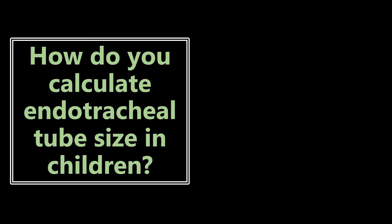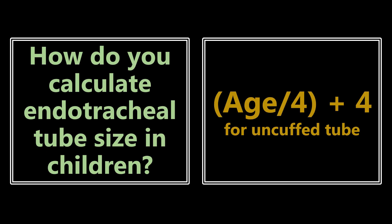How do you calculate endotracheal tube size in children? The formula is age divided by four, plus four. For example, a four-year-old: 4 divided by 4 plus 4 equals size 5. This formula is for an uncuffed tube. For a cuffed tube, use age divided by four plus 3.5 — some sources say three, but 3.5 is most commonly seen.